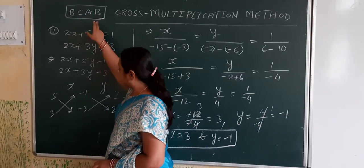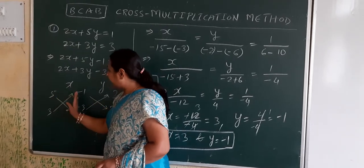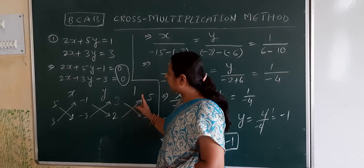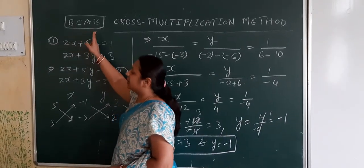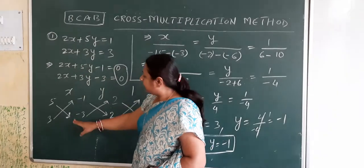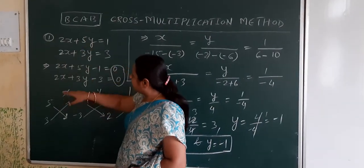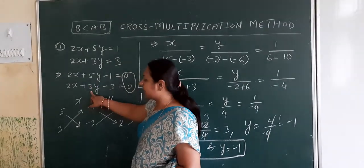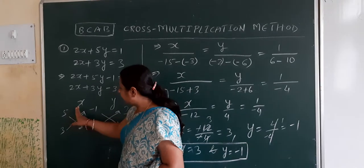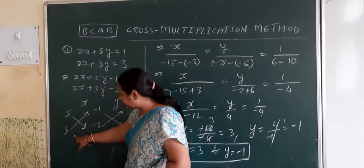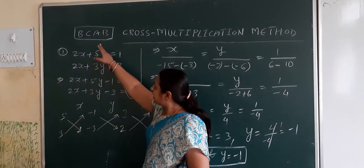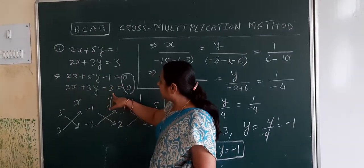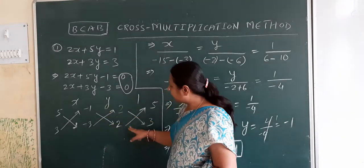So arrange the left hand and right hand of x, y, and the constant term using b, c, a, b only. The coefficient of y is 5 in the first equation and 3 in the second equation. So on the left hand side of x you put 5 and 3. For c, the constant term, on the right hand side of x you put minus 1 and minus 3.